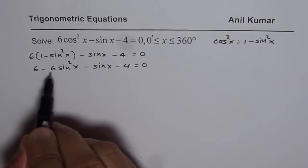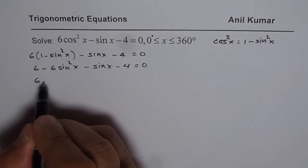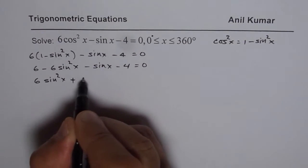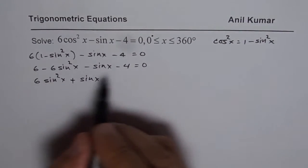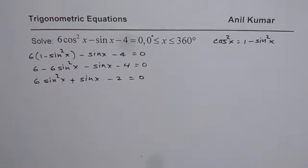Let us bring all these terms with leading coefficient positive. So we will take them on the right side. We will write 6 sin square x. We will change the signs. So we will write sin x. I prefer to write leading coefficient positive. 6 minus 4 is plus 2. When we take it on the other side becomes minus 2 equals to 0.